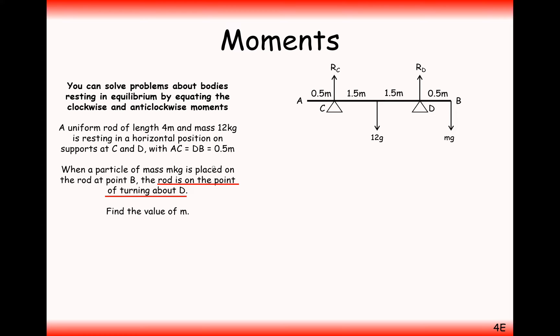If our beam is on the point of turning around D, that means that if I was just to increase the amount of mass on this right-hand side here, then it would start to tilt in the right-hand direction downwards and flip over pivot D. But M is the perfect amount of force to keep it perfectly stationary. Any increase in that force will rotate it around this pivot D.